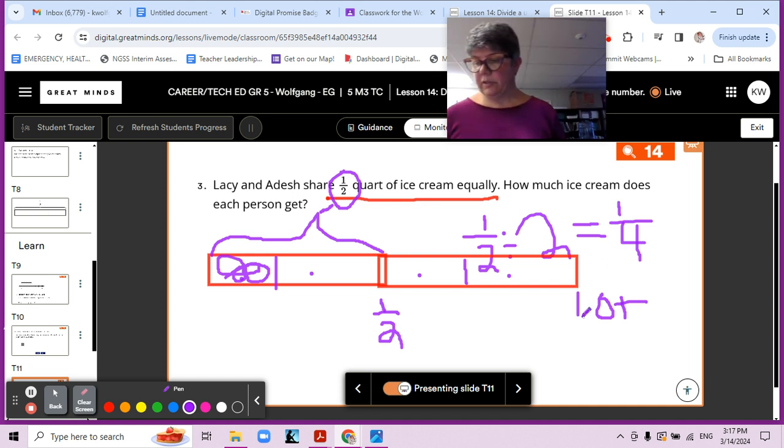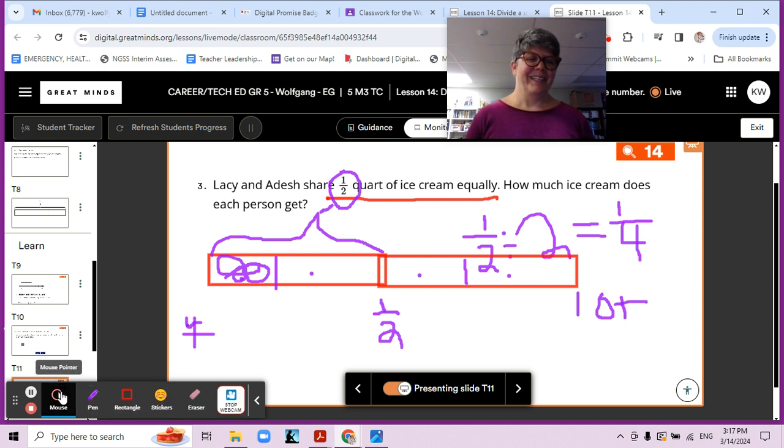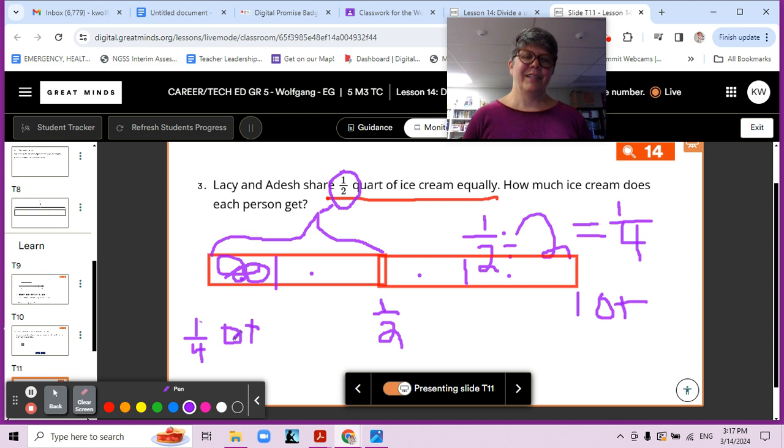So, how much ice cream does each person get? One fourth quart of ice cream. Please make sure that you write that down. Maybe I can. There we go. One. No, that messed up. Sorry. Should have put the four on the bottom. There we go. One fourth. And you can abbreviate if you want. Quart is QT.